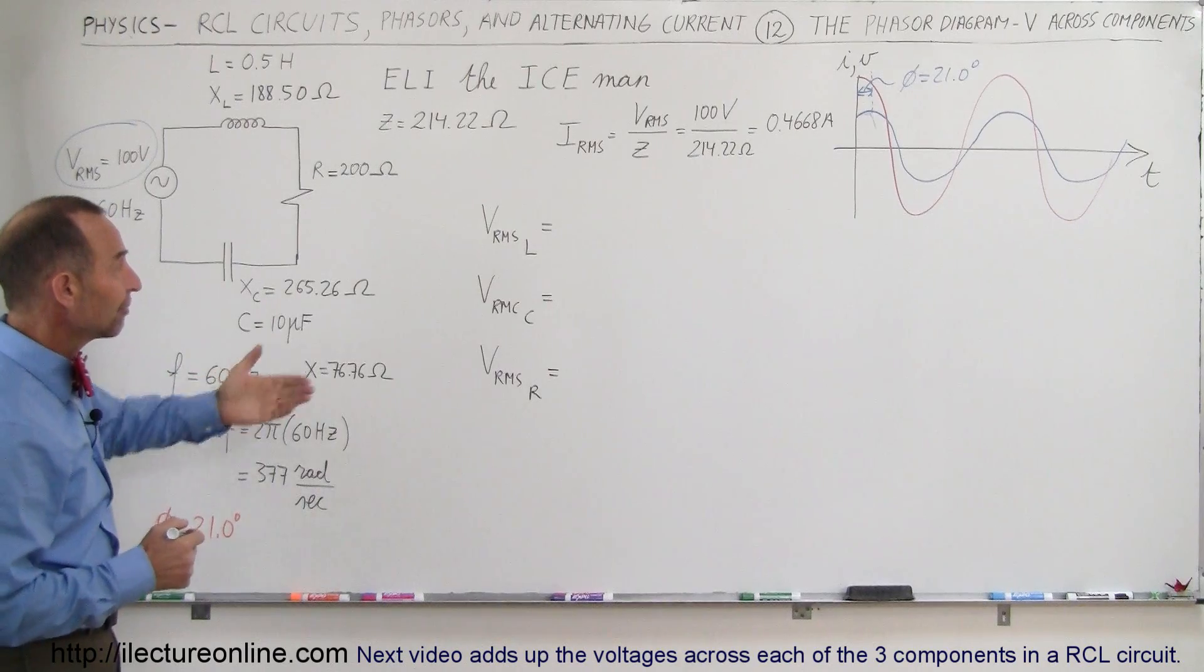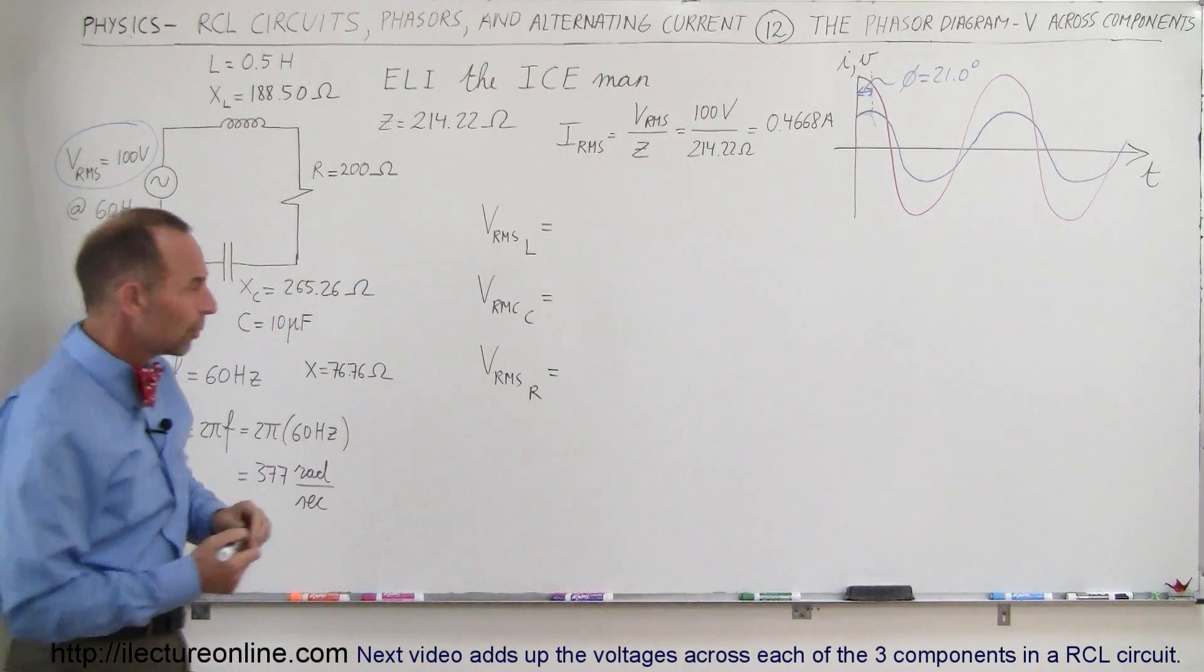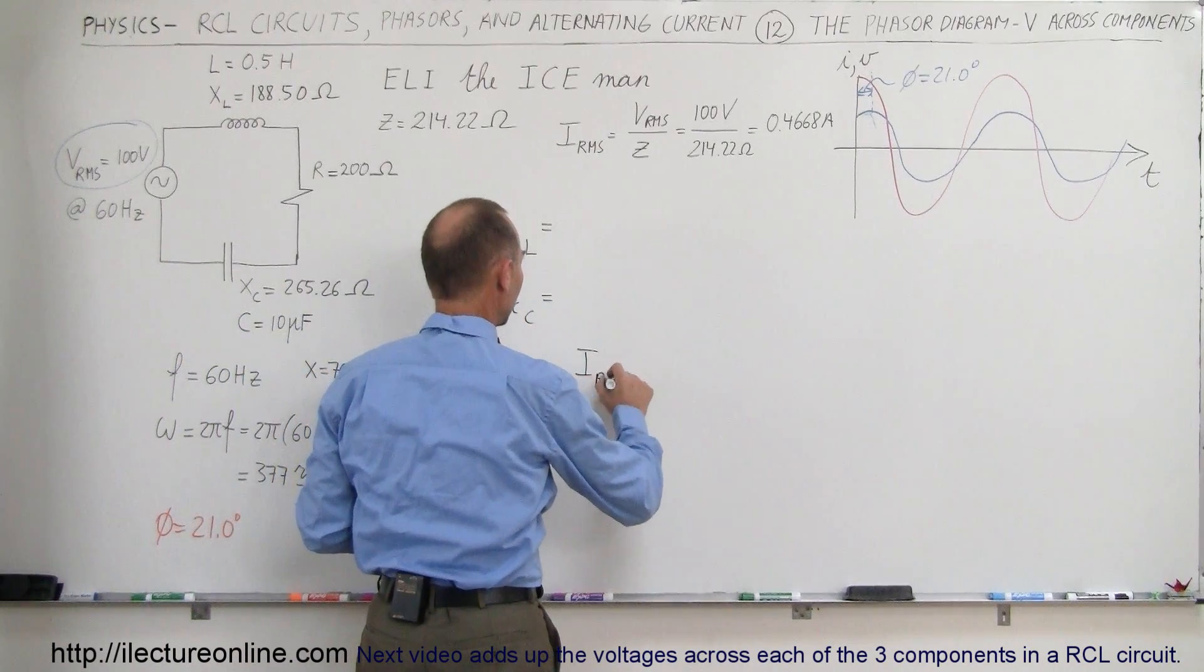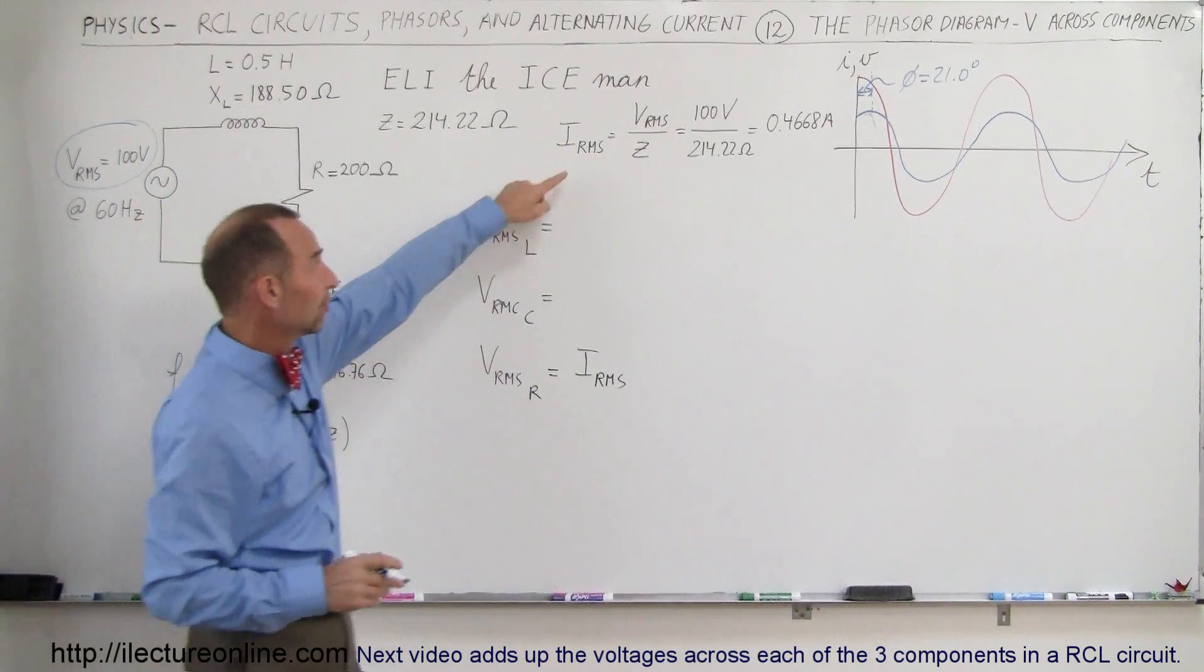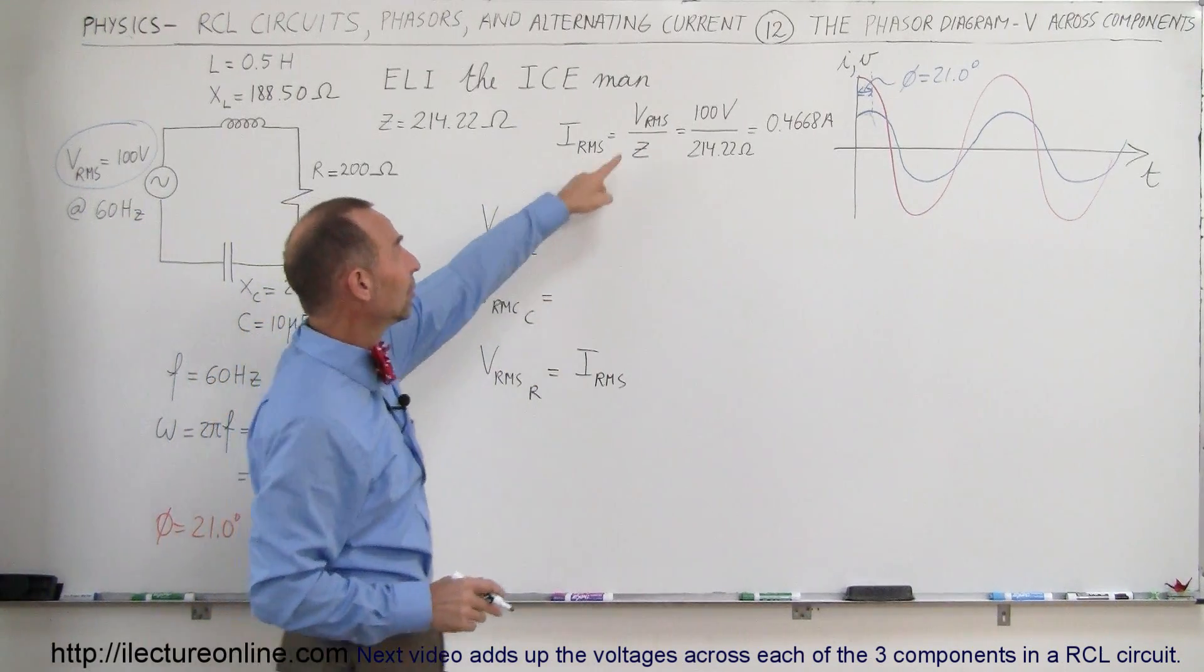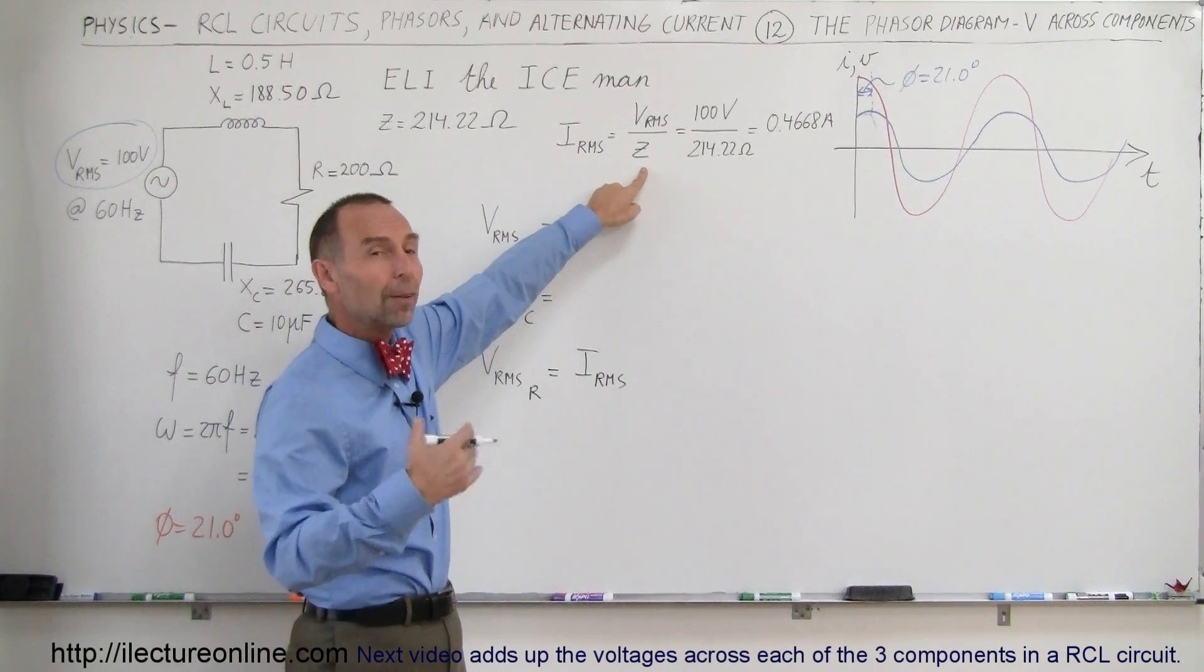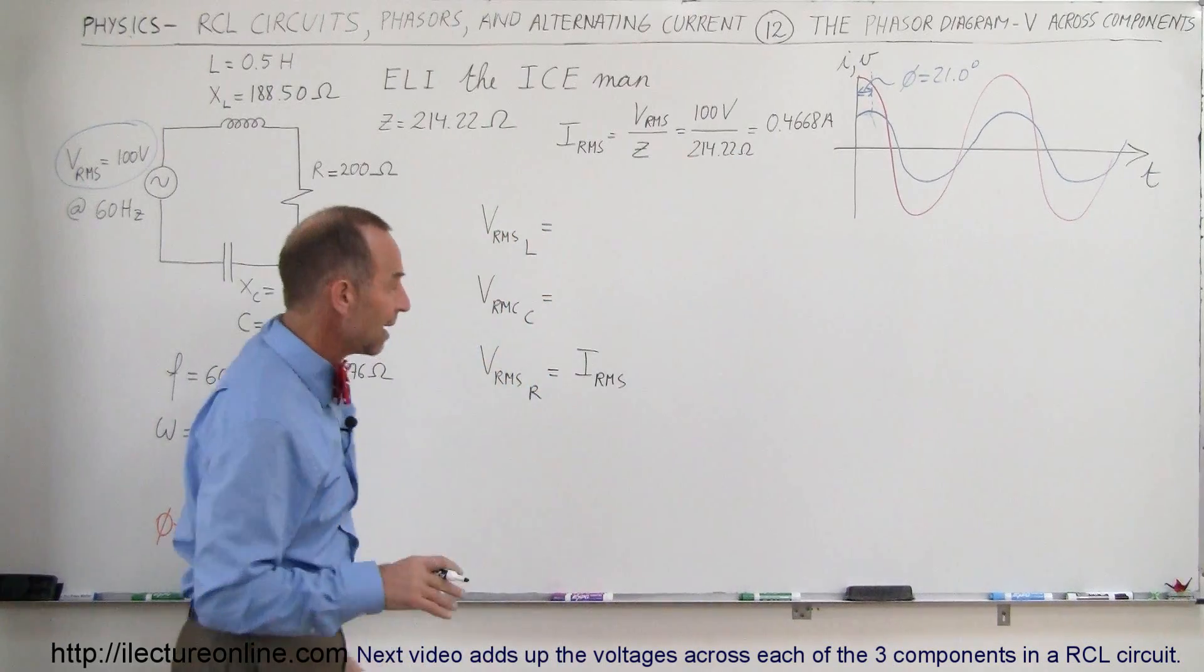First of all, how do you find the voltage across the inductor, capacitor, and resistor? Well, the resistor we already know how to do. That's simply equal to the current I. Since we're trying to find the RMS voltage, we use the RMS current, which we figured out in the previous video: the voltage of the source divided by the total impedance, which equals 0.4668 amps.